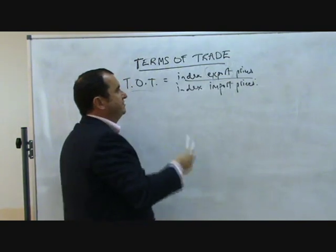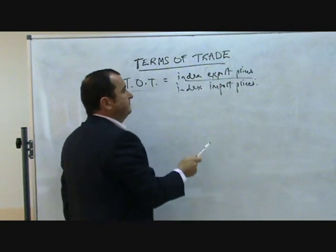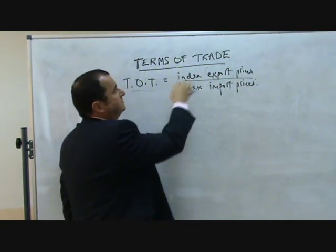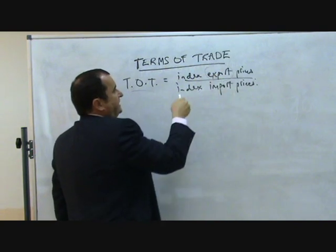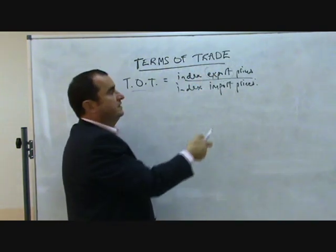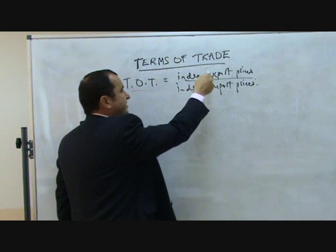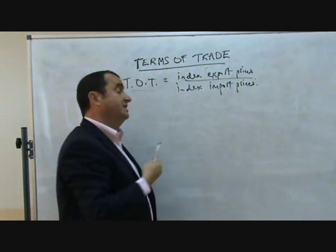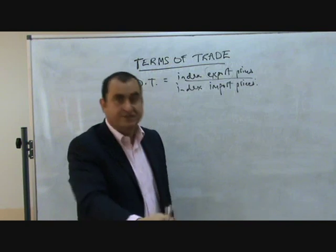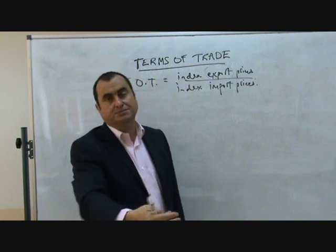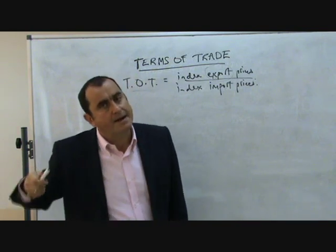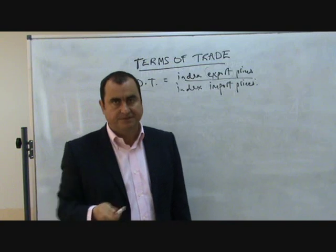If export prices increased relative to import prices, then this calculation — this fraction — becomes more top heavy. Export prices going up compared to import prices is good for a country, because with the things that they sell and export they earn more money and are able to buy a greater amount of imports.